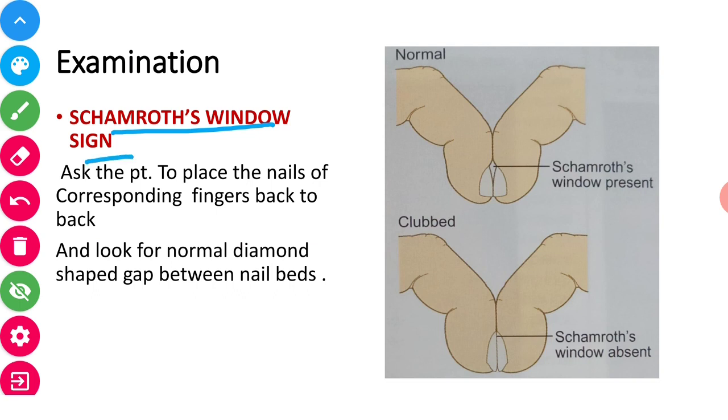In this, what do you have to do? Just like in this picture, you have to place both corresponding fingers of the patient back to back. And then you have to look at this space between the fingers. This is known as Schamroth's window. If it is present then it's normal. If Schamroth's window is absent, it means the finger is clubbed. So this is a very important sign.